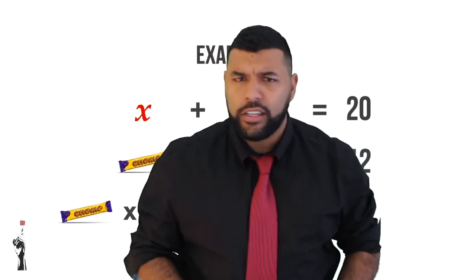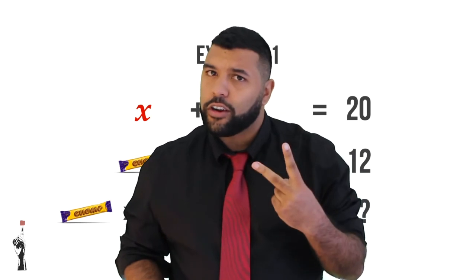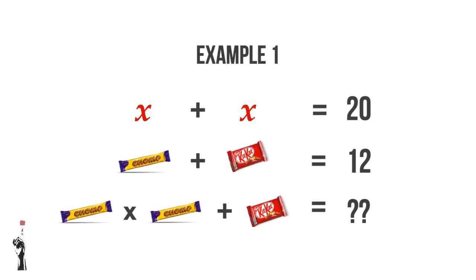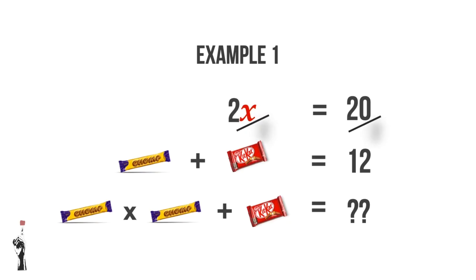Just like you'd have red chocolate plus red chocolate equal to two red chocolates, in this example we can see that X plus X is now equal to 2X. Now if 2X is equal to 20, it must mean then that X is equal to 10.